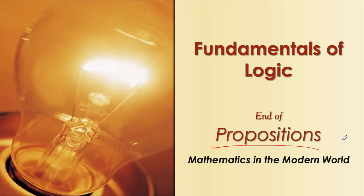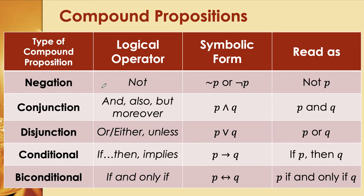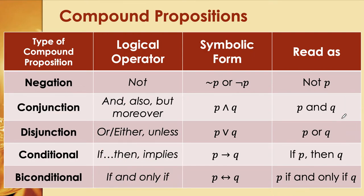We will now start with the operations on propositions. We've seen some operations briefly during translations. As a review, compound propositions have five types: negation, conjunction, disjunction, conditional, and biconditional. Their connective words are: not, and, or, if-then, and if-and-only-if respectively. Take a screenshot of this table as we will use it in the next slides.